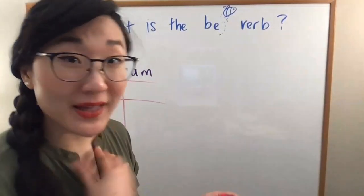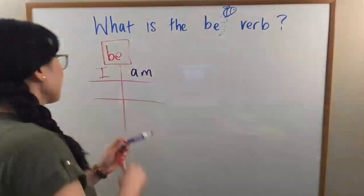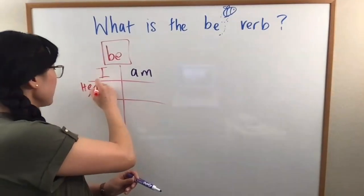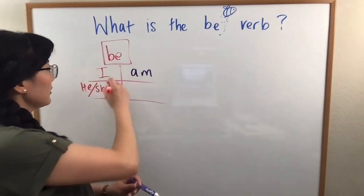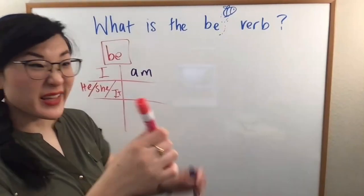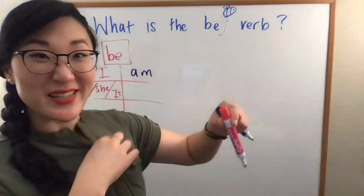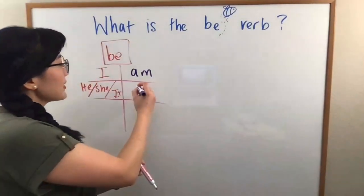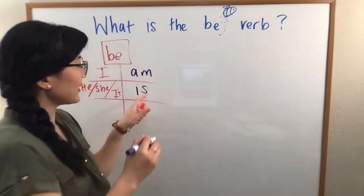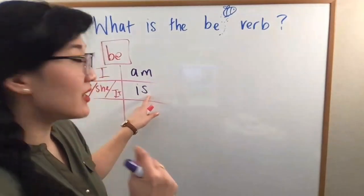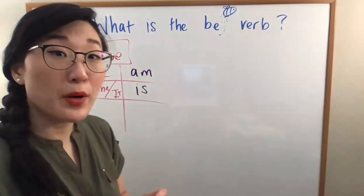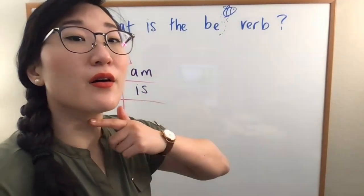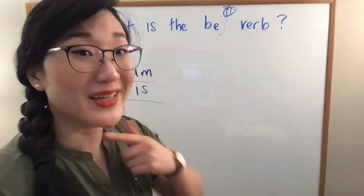I am Caroline. He, for a man. She, for a woman. And it, for anything. This is it. This is an it. Okay. We use IS. IS. So, you see the letter S, but the pronunciation is Z. So, you feel a vibration in your throat. Is.